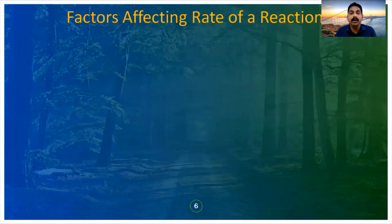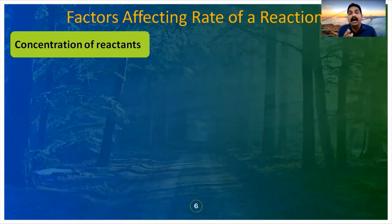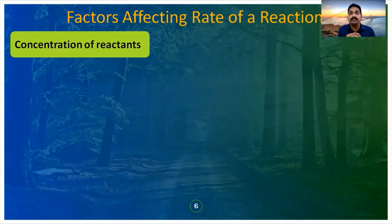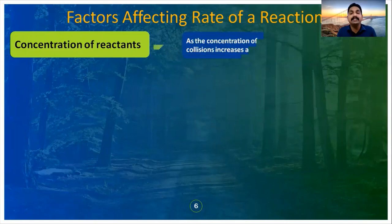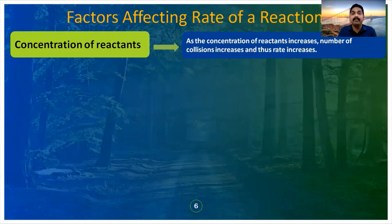Now we will see the factors which affect the rate of a reaction. The first factor is the concentration of reactants. If the number of reactant molecules is more, there are more collisions, so the rate will be more. As the concentration of reactants increases, the rate of reaction increases because the number of collisions is increasing.